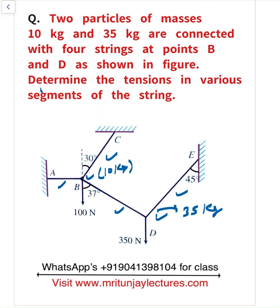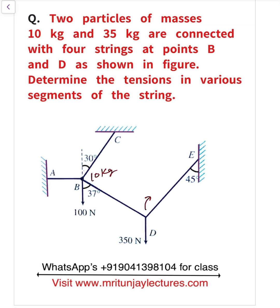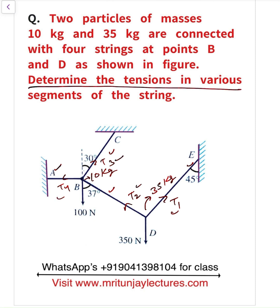So how can we determine these tensions? Basically, two masses are given: one block is 10 kg and the other is 35 kg. There are four strings with tensions T1, T2, T3, and T4. Our goal is to determine T1, T2, T3, and T4.